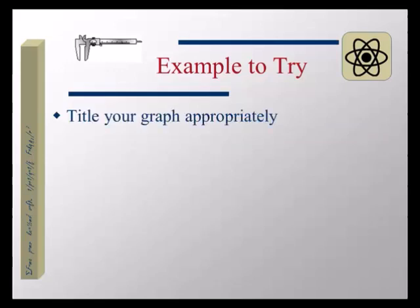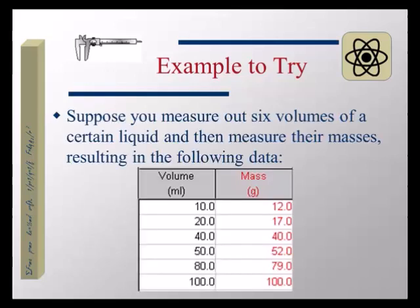The first thing we want to do is title our graph. Let's hold our graph paper in portrait orientation and put an appropriate title at the top based upon our two variables and the rule for making titles. Our variables were volume and mass. You have to figure out which is the independent and which is the dependent, and title it appropriately.